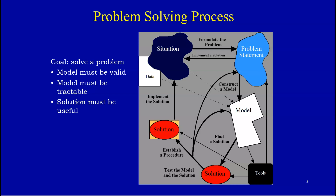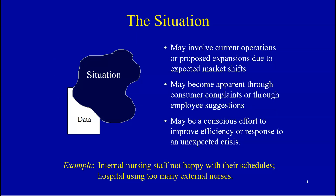In week one, we went over this problem-solving process, where we start with the situation itself, then form a problem statement, look at the model we're going to use, and develop our solution. The situation may involve current operations, customer complaints, or your own conscious effort to improve efficiency or resolve an issue — which is what we're going to do today with the staffing problem in the scheduling model approach.